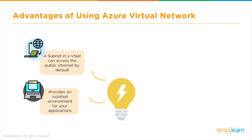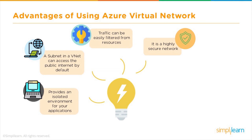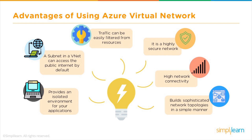Traffic can be easily filtered from different resources — you can define access control lists and security groups to control how traffic reaches your servers or applications. It is a highly secure network where security groups and policies are implemented by the end user. It also provides high network connectivity with higher bandwidth compared to a normal internet connection. And it builds sophisticated network topologies in a simple, easily manageable manner, with fewer troubleshooting issues.